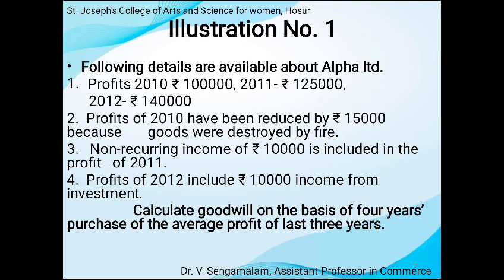Let us go into illustration number one. Following details are available about Alpha Limited. Profits: 2010 — Rs. 1,00,000; 2011 — Rs. 1,25,000; 2012 — Rs. 1,40,000. Profit of 2010 has been reduced by Rs. 15,000 because of goods destroyed by fire. Non-recurring income of Rs. 10,000 is included in the profit of 2011. Profit of 2012 includes Rs. 10,000 income from investment.